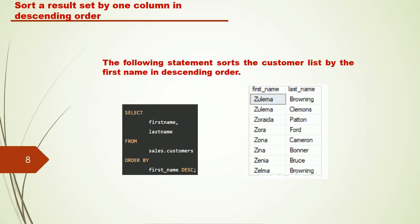To sort a result set by one column in descending order, the following statement sorts the customer list by the first name in descending order. If you want to display information in descending order, you write: SELECT first_name, last_name FROM sales.customer ORDER BY first_name DESC. This will sort records by first name in descending order — first showing names starting with Z, then J, and so on.